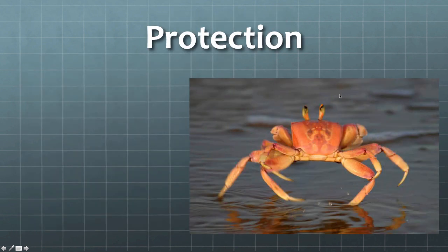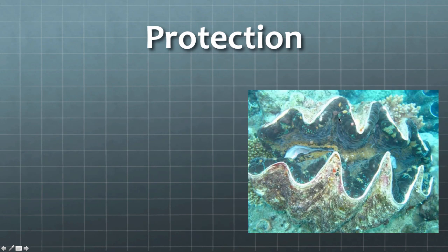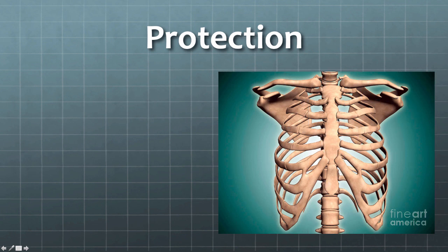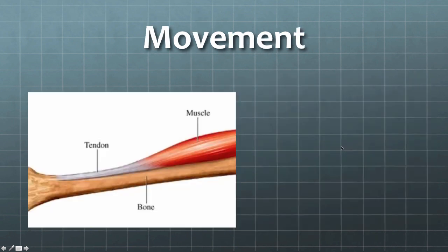Now let's move on to protection. Obviously this crab is getting a lot of protection from its skeleton, and so is this clam. We also get protection from our skeleton — our rib cage protects the lungs and heart, and our cranium, the skull, protects our brain.